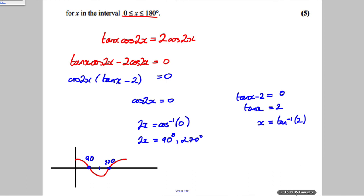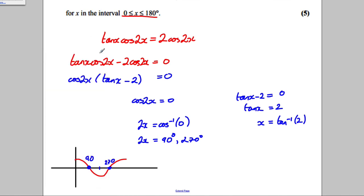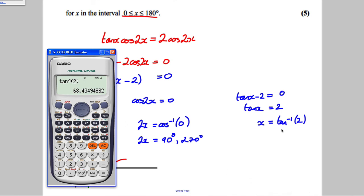And the inverse tan of 2. We get ourselves 63 degrees. And you know the tan graph looks like this type of thing here. And between 0 and 180, there is only one answer, which was the 63.4.